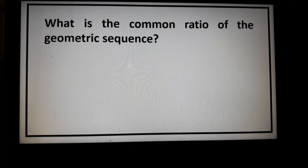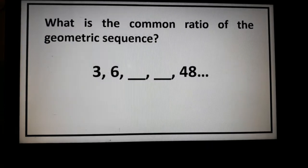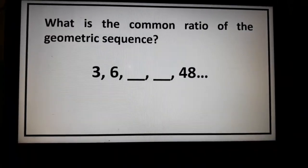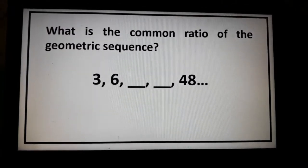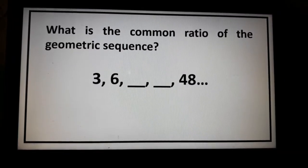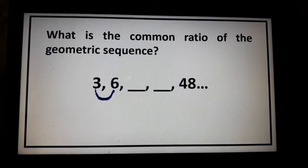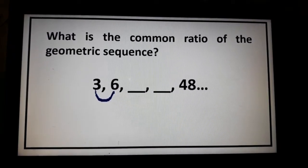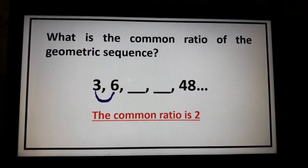Let's have another example. What is the common ratio of the geometric sequence 3, 6, blank, blank, 48? Remember that to get the common ratio, we need to divide two consecutive terms. In this case, 3 and 6 are consecutive terms, so we can just divide these two terms. 6 divided by 3 is equal to 2. Therefore, the common ratio is 2.